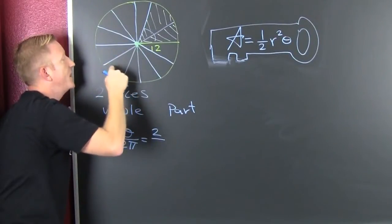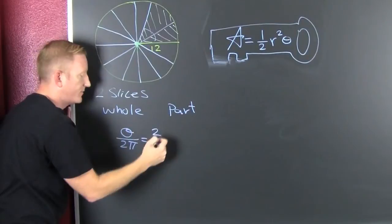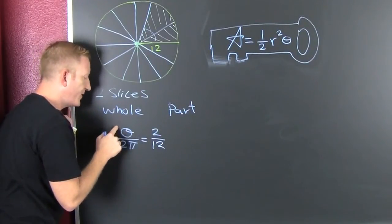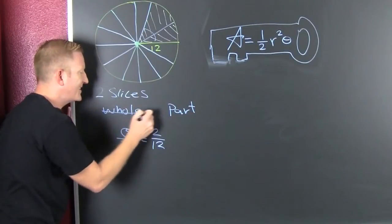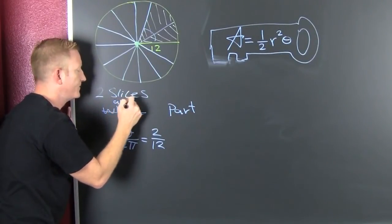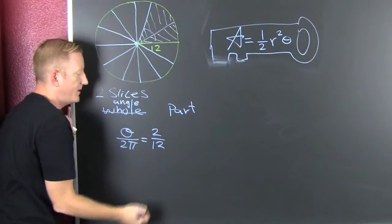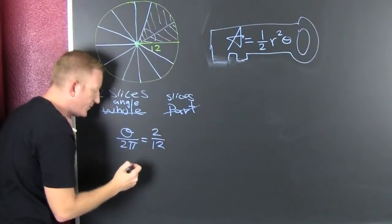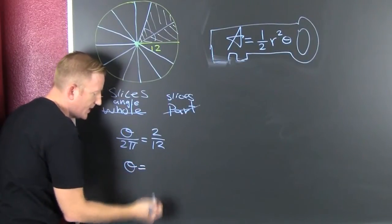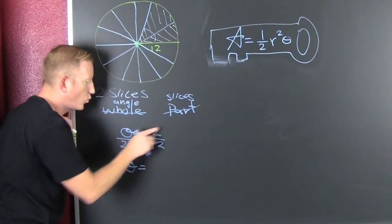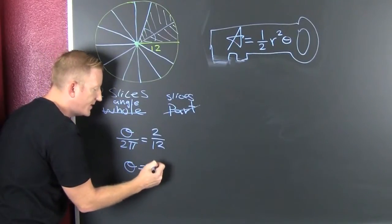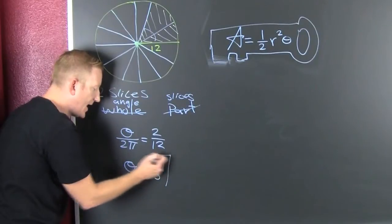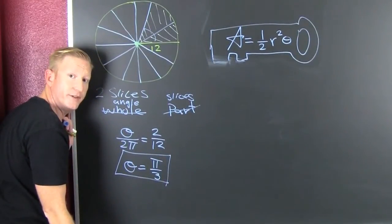12 slices. So we had 2 out of 12 when we're looking for theta out of 2 pi. I guess I should have called this angle. And I find out that my theta is going to be... That's a 4, that's a 12. This is pi over 3. So now we have our angle. Our angle is going to be pi over 3.